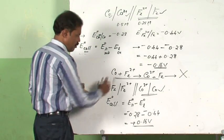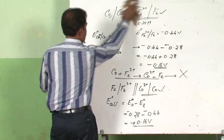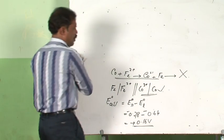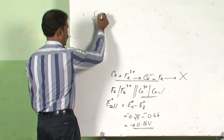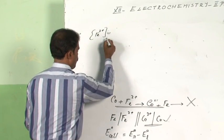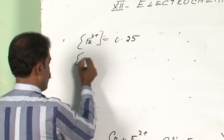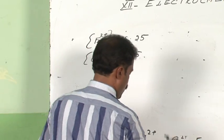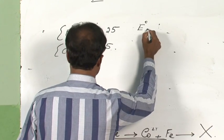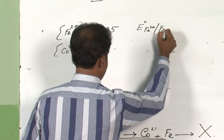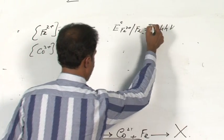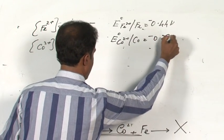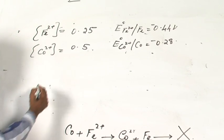We have a cell set up under non-standard conditions. The concentration of Fe²⁺ is given as 0.25 M and the concentration of Co²⁺ is given as 0.5 M. The E⁰ values are already known: E⁰ of Fe²⁺/Fe is −0.44 V and E⁰ of Co²⁺/Co is −0.28 V. Using the Nernst equation, we can find out the EMF of the cell.